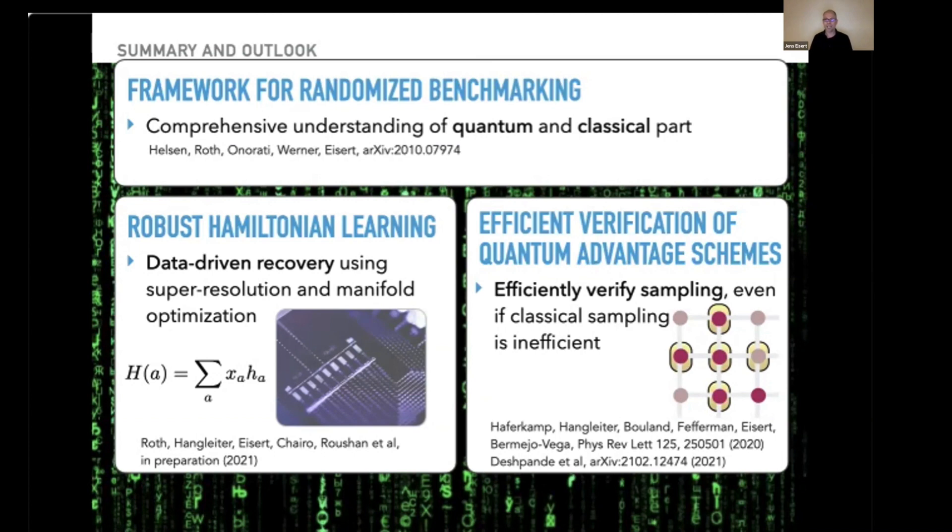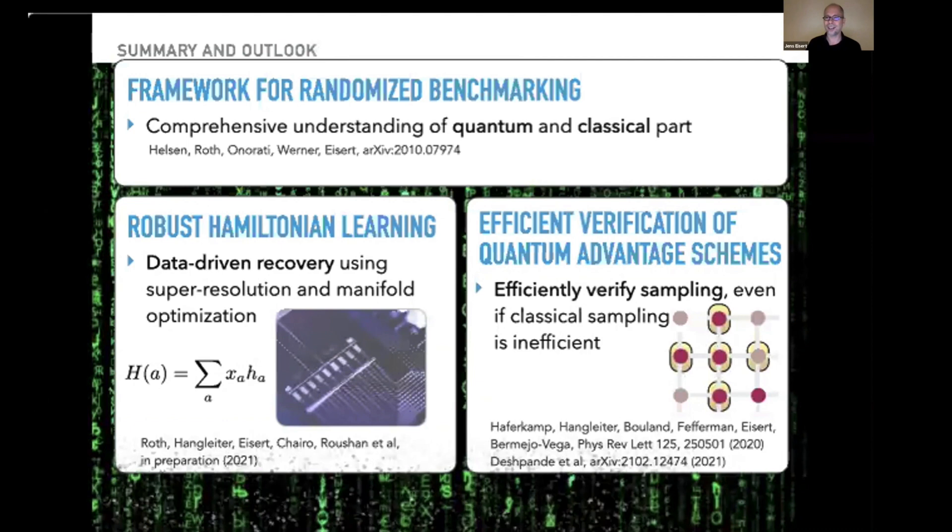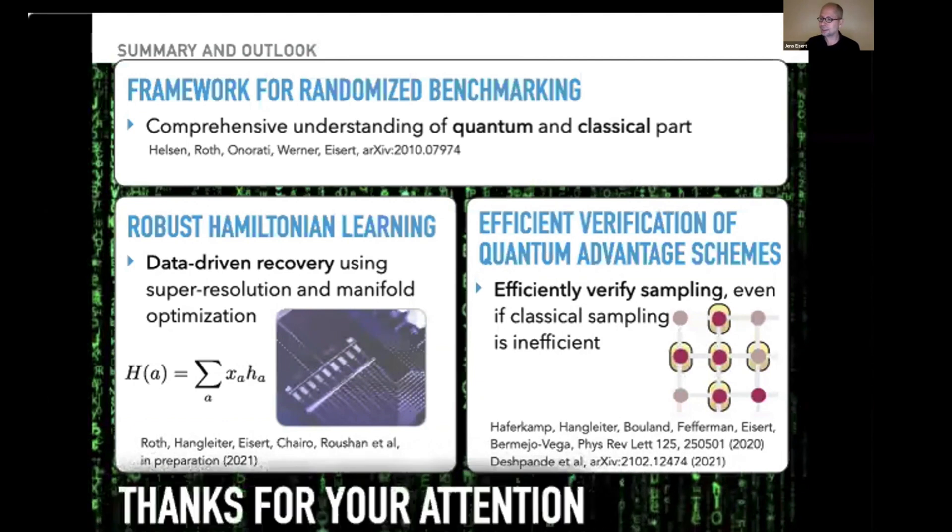We've done this for new schemes based on qudit atomic settings and also with our friends at Xanadu on notions of Gaussian boson sampling. Sometimes you can verify the correctness but cannot efficiently predict what comes out at the end. With this I thank you very much for your attention, and I'm looking forward to questions. We are precisely at 15 minutes, thanks.